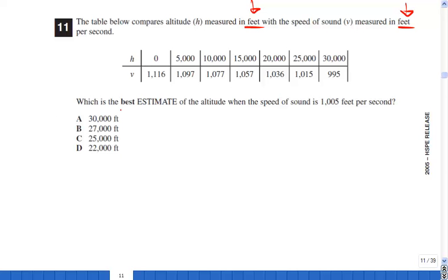And it says the question: what is the best estimate of the altitude when the speed of sound is 1005 feet per second?